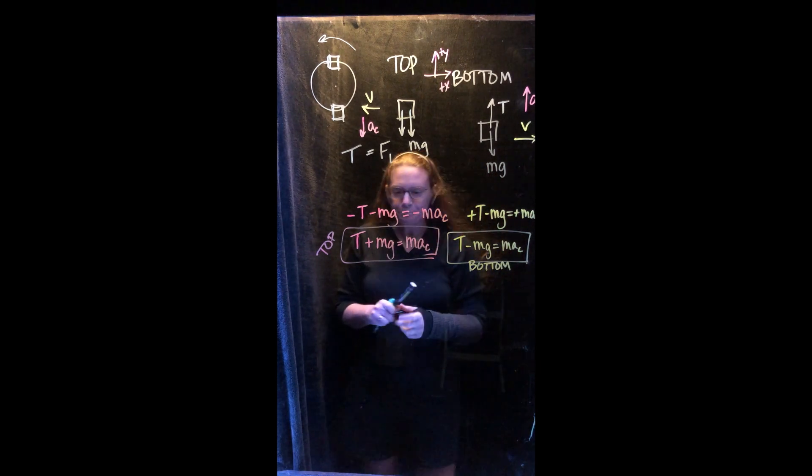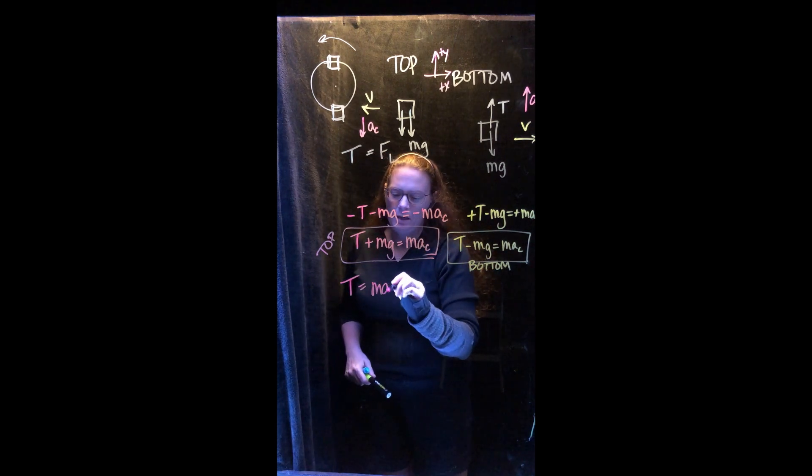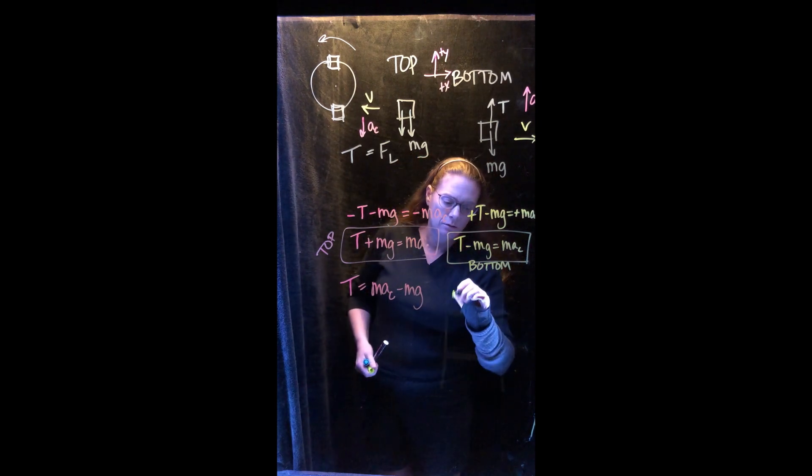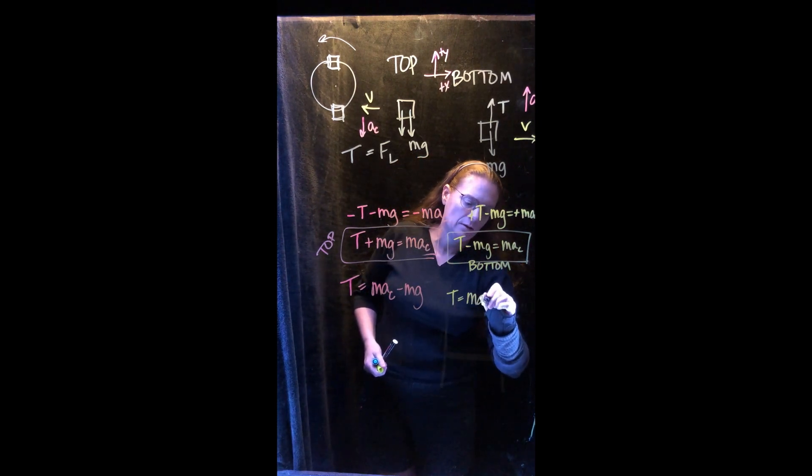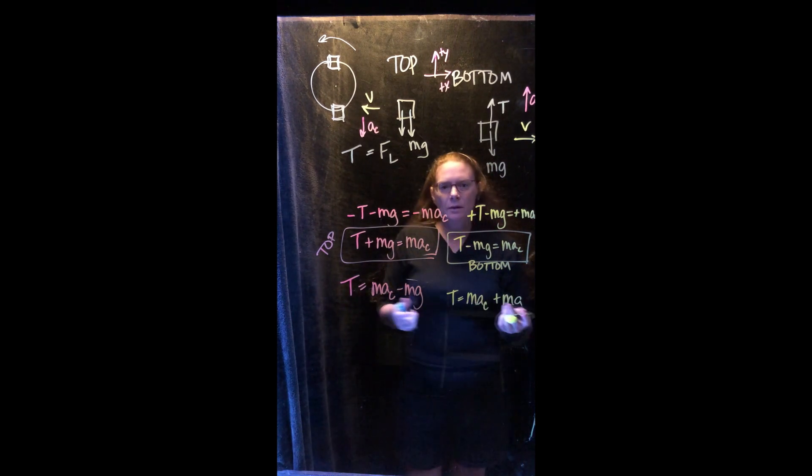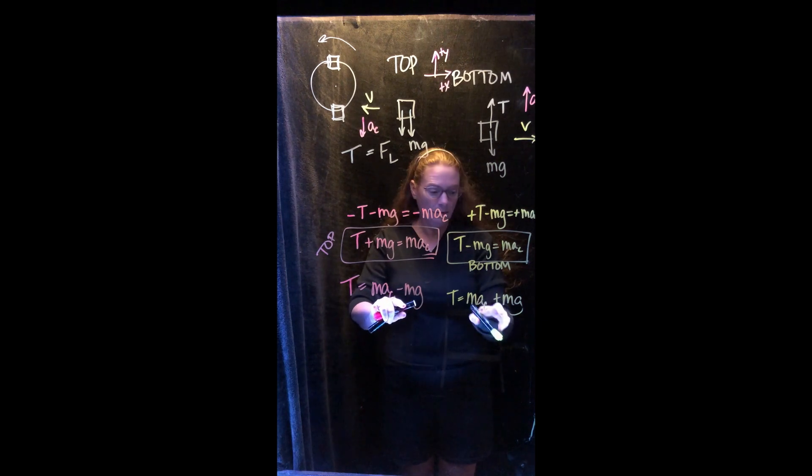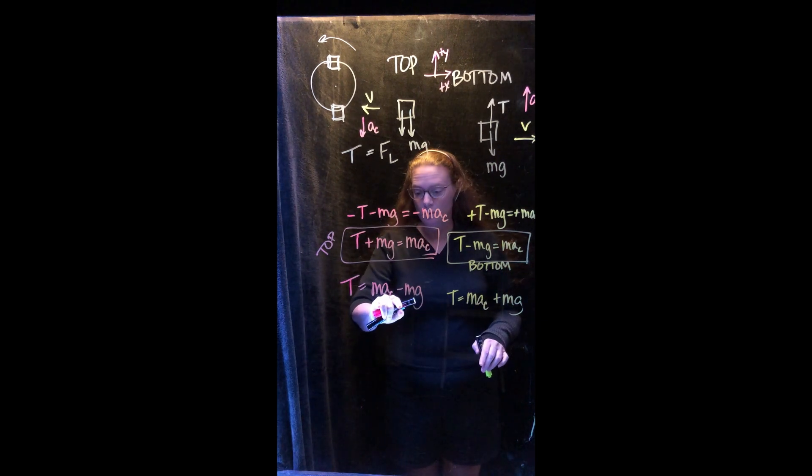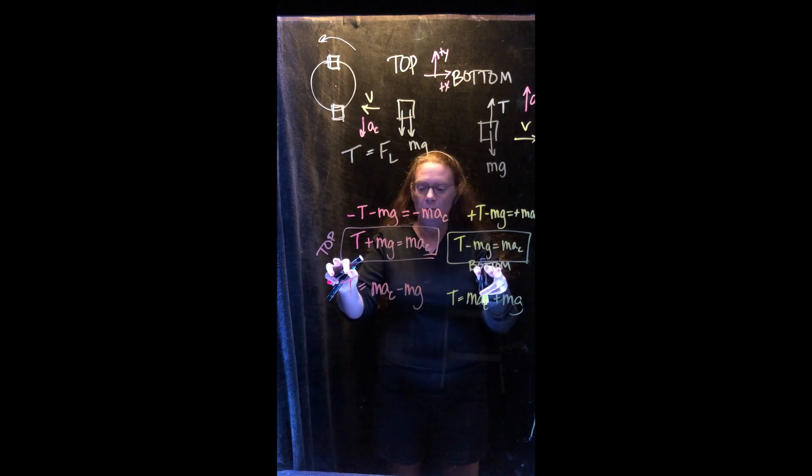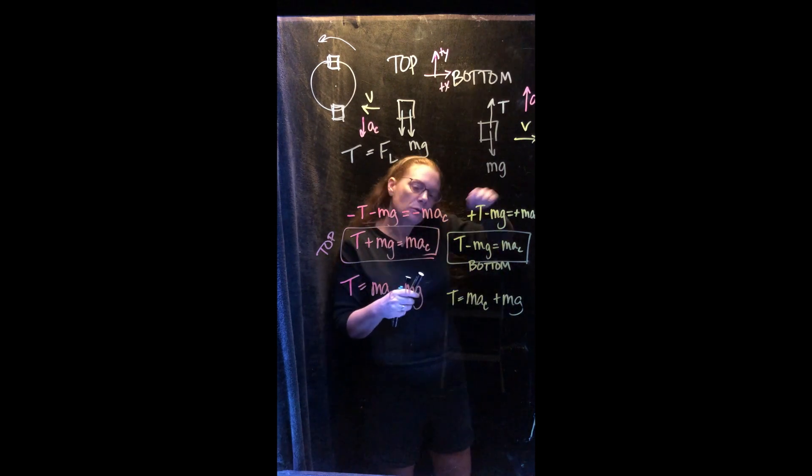Let's compare the tensions in those two. If I solve this for tension, tension is mac minus the weight. Here it is, tension is mac plus the weight. Which one of those is going to be bigger? Well, that one. It has to be. This is adding them together, this one you're subtracting. So at the top or the bottom, which tension is going to be bigger? That one.